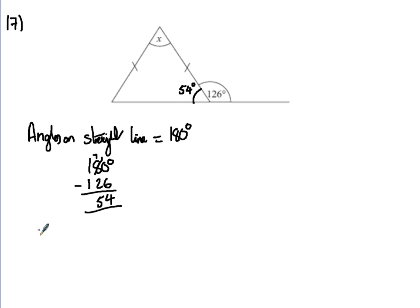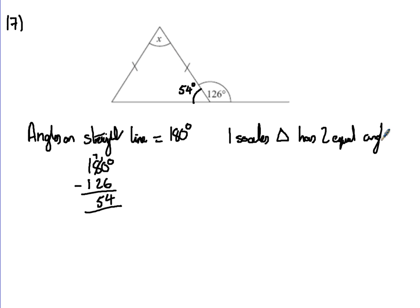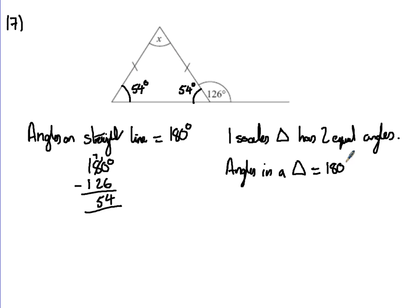Now what we also know is an isosceles triangle has two equal angles. So if we know that angle is 54 degrees, we also know this other base angle is 54 degrees. I'll put them in the diagram so it's clear. And then angles in a triangle equal 180 degrees.